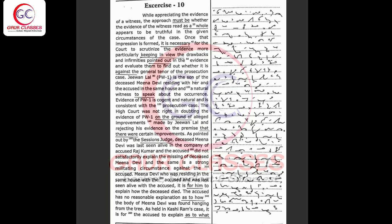As pointed out by the session's judge, deceased Meena Devi was last seen alive in the company of accused Rajkumar and the accused did not satisfactorily explain the missing of deceased Meena Devi and the same is a strong militating circumstance against the accused.